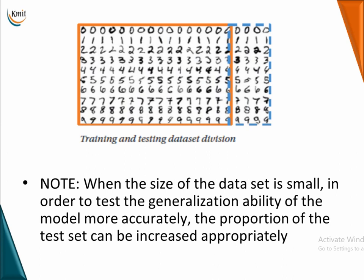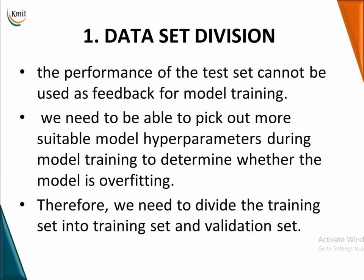This is a simple scenario. When the size of the dataset is small, you can increase your test set to test the generalization ability more accurately. Now, the performance of the test set cannot actually be used as feedback for model training. We need to pick more suitable hyperparameters while training, to determine whether the model is overfitting or not. For that reason, only the test set is not sufficient, and only the training set is not sufficient — we need another set called the validation set.